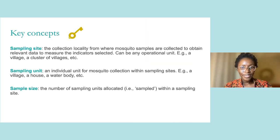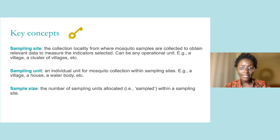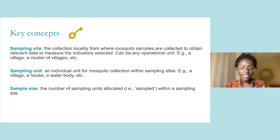There are three concepts to be aware of in Module 5. A sampling site is the locality where mosquitoes are collected to obtain data relevant to your selected indicators. A sampling site can refer to any operational unit that makes sense for your context, such as a health catchment area, a village, or even a cluster of villages. A sampling unit is an individual unit for mosquito collections within a sampling site — for instance, a village, a house, a water body, and so on. Finally, the sample size is the number of units sampled within a site. For example, you might decide to sample 10 houses within a village; in this case, your sample size is 10 and your sampling site is the village.